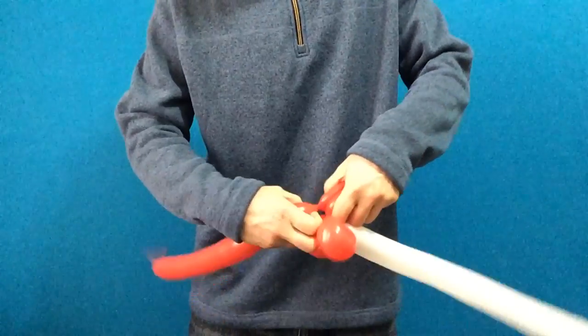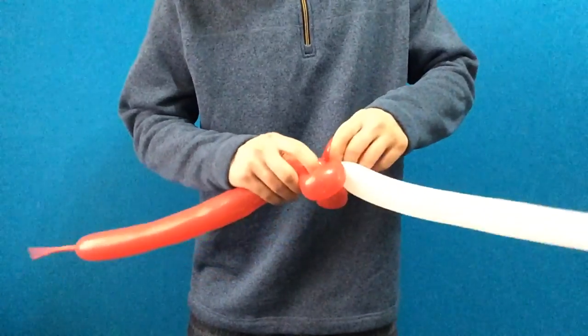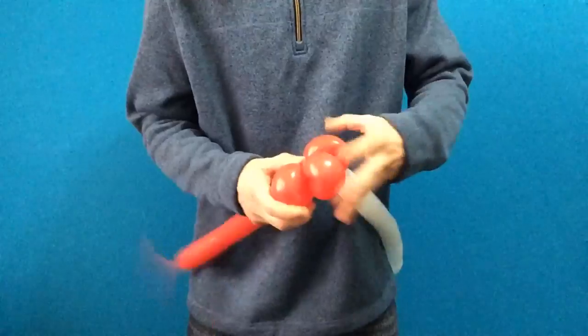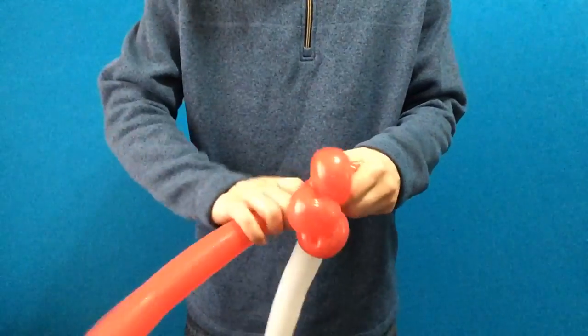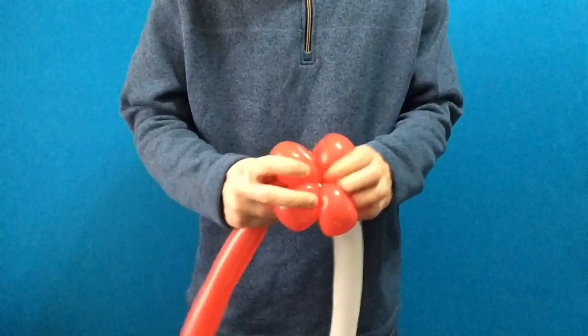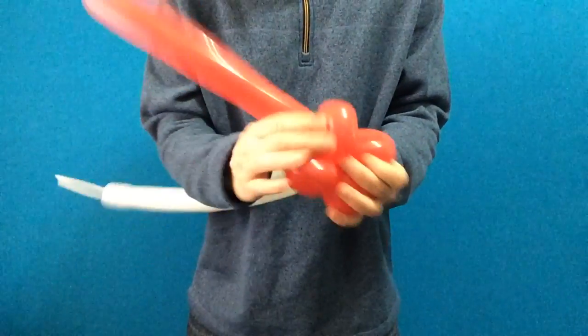Here's the third petal, nice and soft, squeezing, twisting, lining it up. It's hard to get it exactly perfect, but as long as it's pretty flat. Let's do a fourth. We want to get the red balloon out of the way right away. So here's our fourth petal.